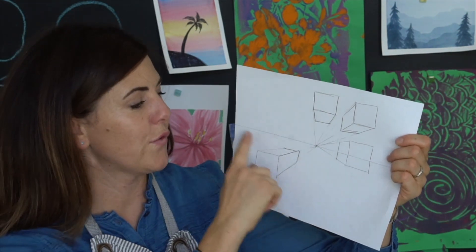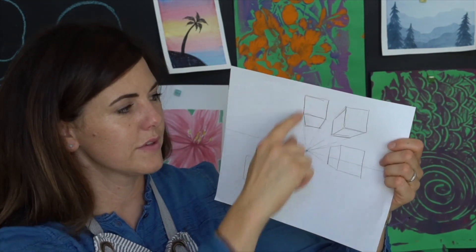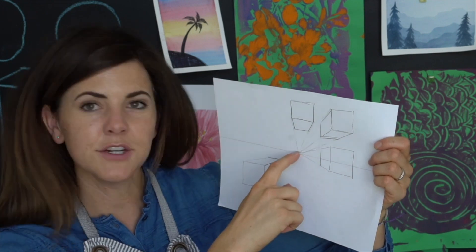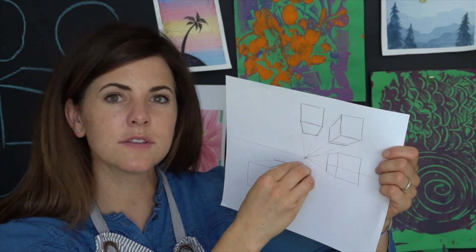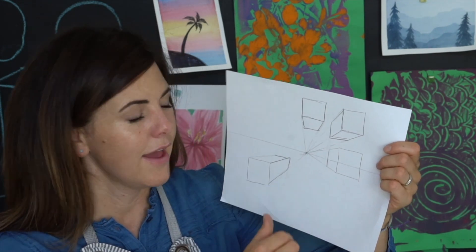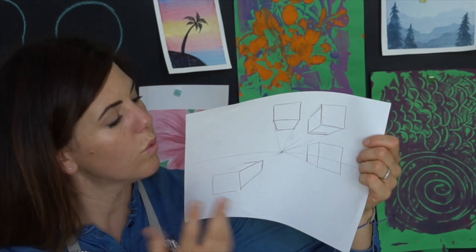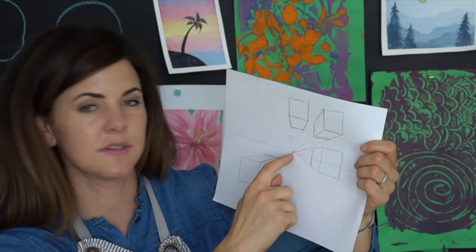There are some keywords I want to go over. There's a horizon line, that's where the sky meets the earth. A vanishing point, that's where everything looks like it's coming together. And then we have, let's see, one point, which is this point.